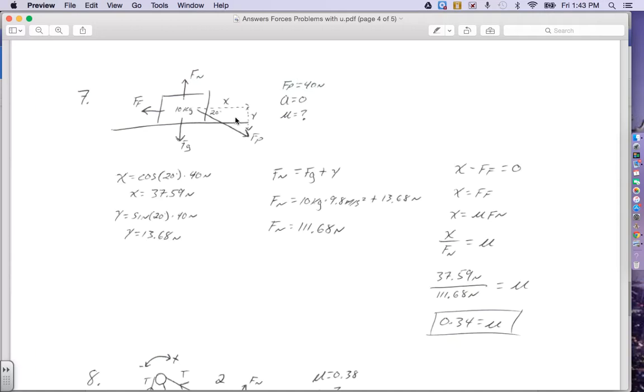Now again, since this thing is not accelerating, there is no A. So my right stuff, X, minus my left stuff, friction, equals MA, but A is nothing, so it just equals zero. That means that my right stuff, X, equals my left stuff, which is force of friction. Now what is force of friction? Friction is the coefficient times the normal force.